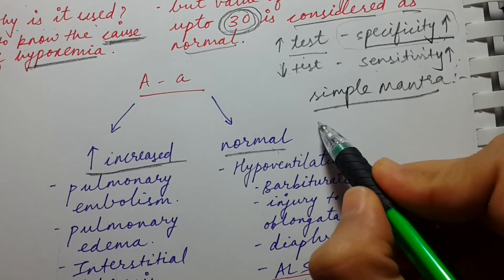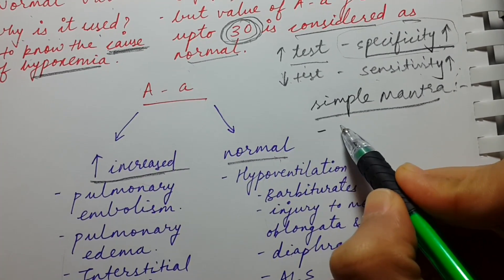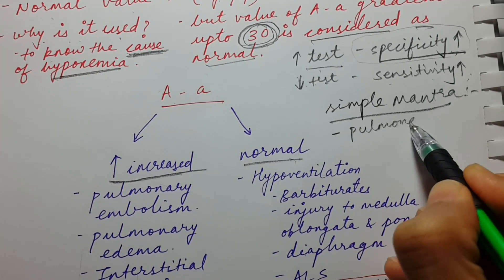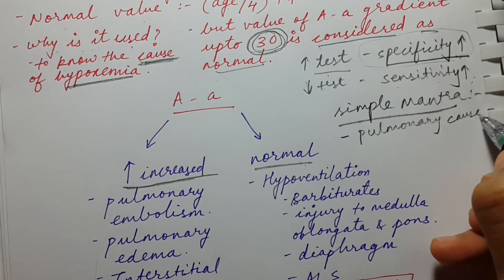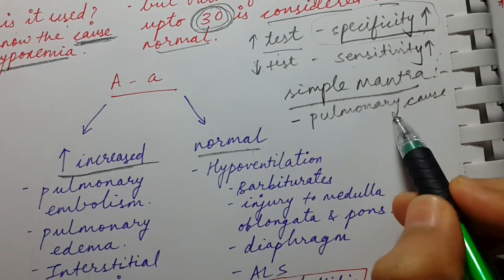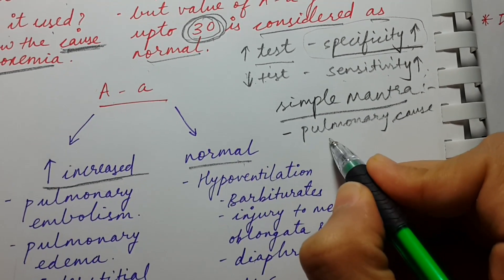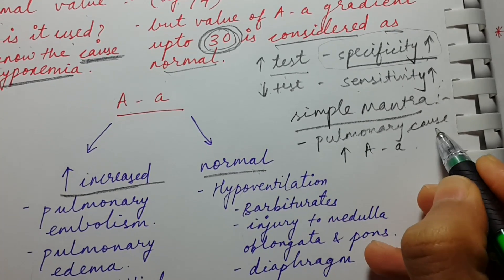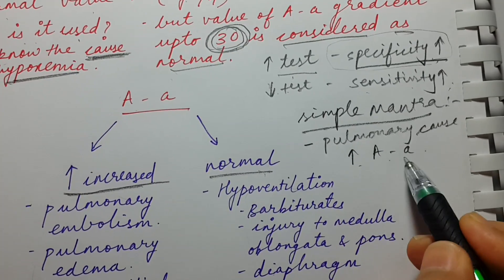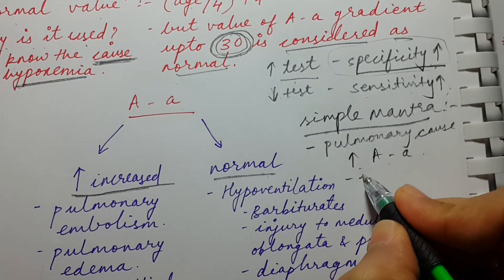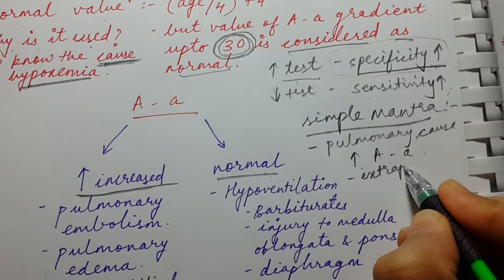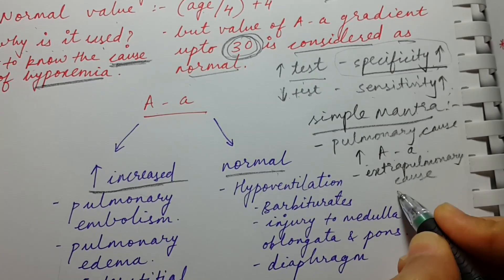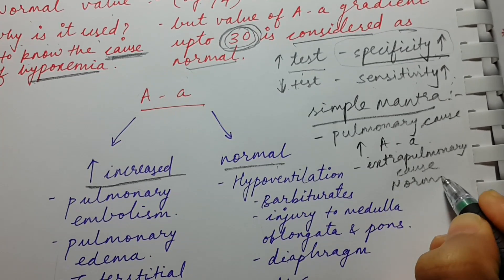So what is that simple mantra? Any pulmonary cause of hypoxemia will always result in an increased AA gradient. Any extra-pulmonary cause of hypoxemia will result in a normal AA gradient.